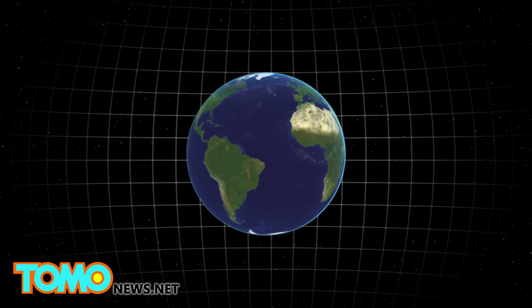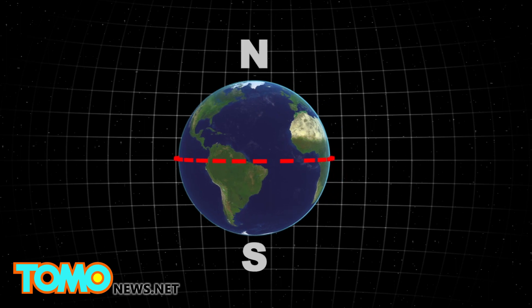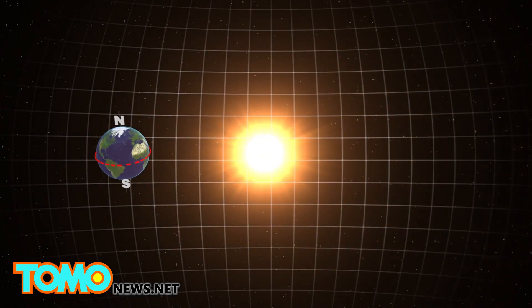Earth is split into north and south by the equator. It orbits the sun at a tilted angle of approximately 23.5 degrees, and it's this tilt that determines the seasons.